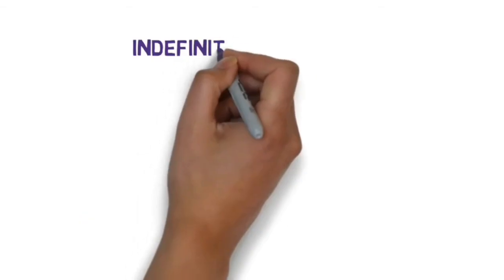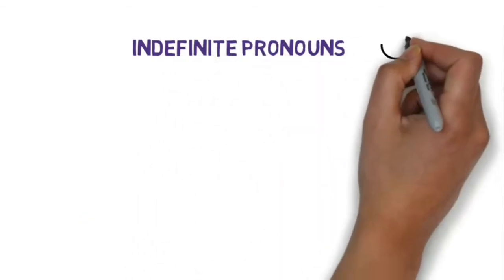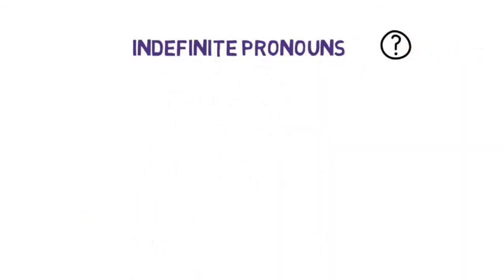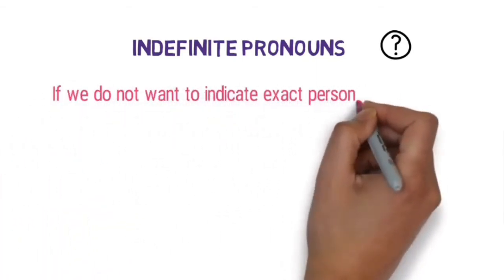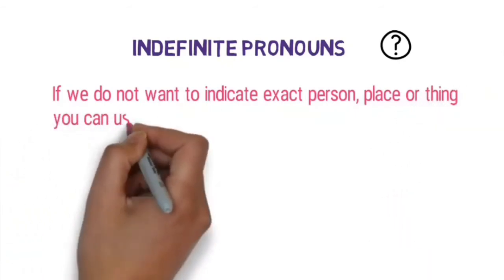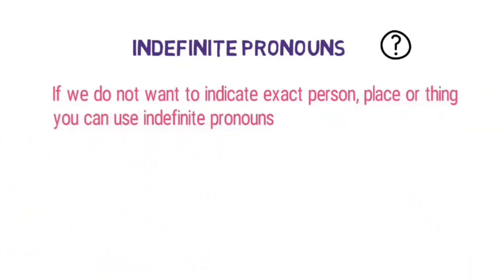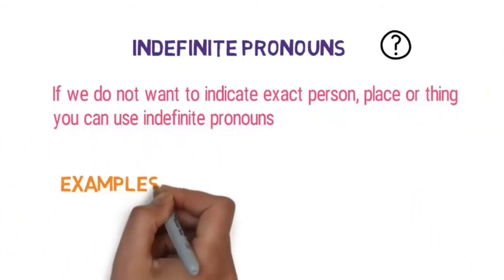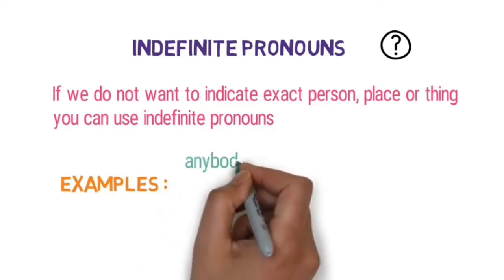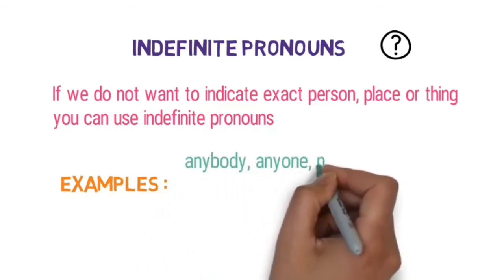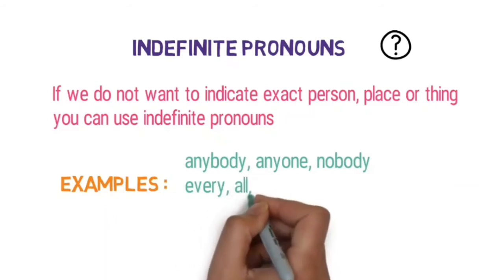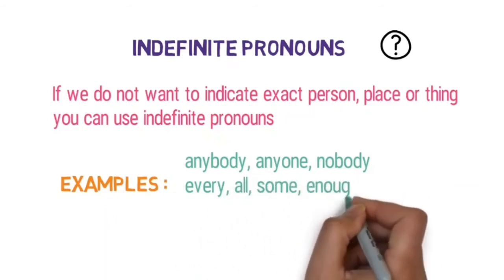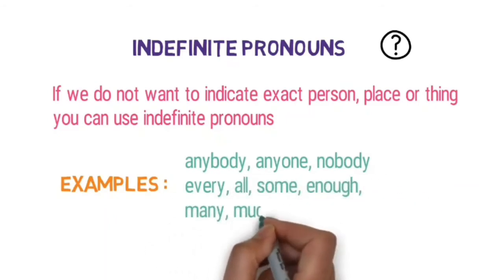Let's start from the indefinite pronouns. What are they and when do we use them? Imagine the situation: we do not want to indicate an exact person, place, or thing. In this case, we can use indefinite pronouns like anybody, anyone, nobody, every, all, some, enough, many, much.